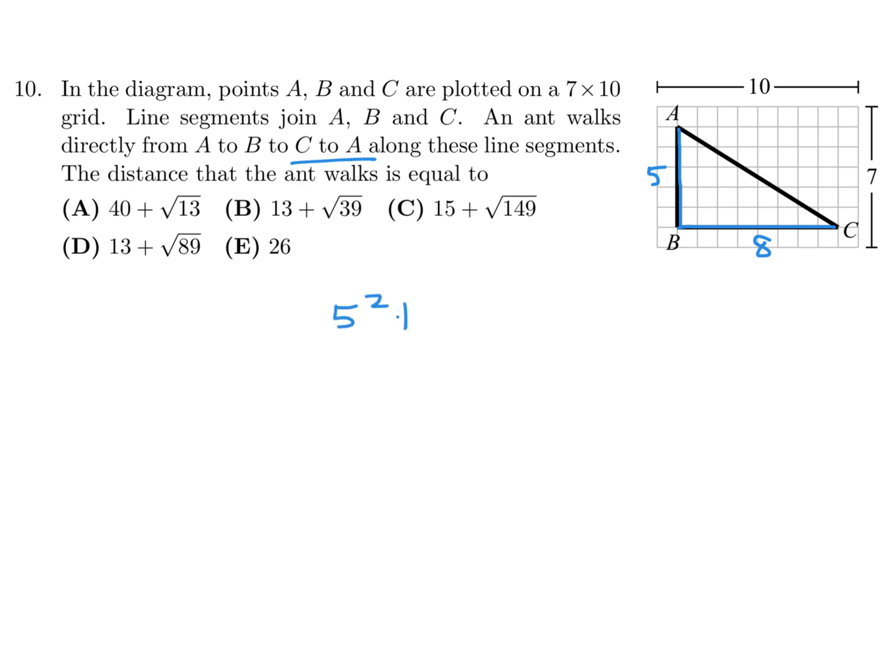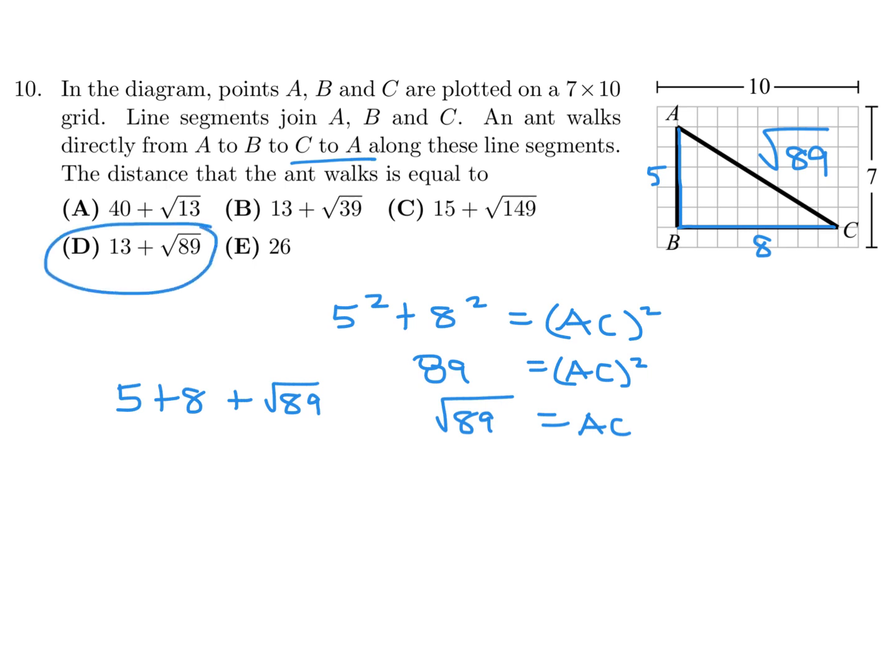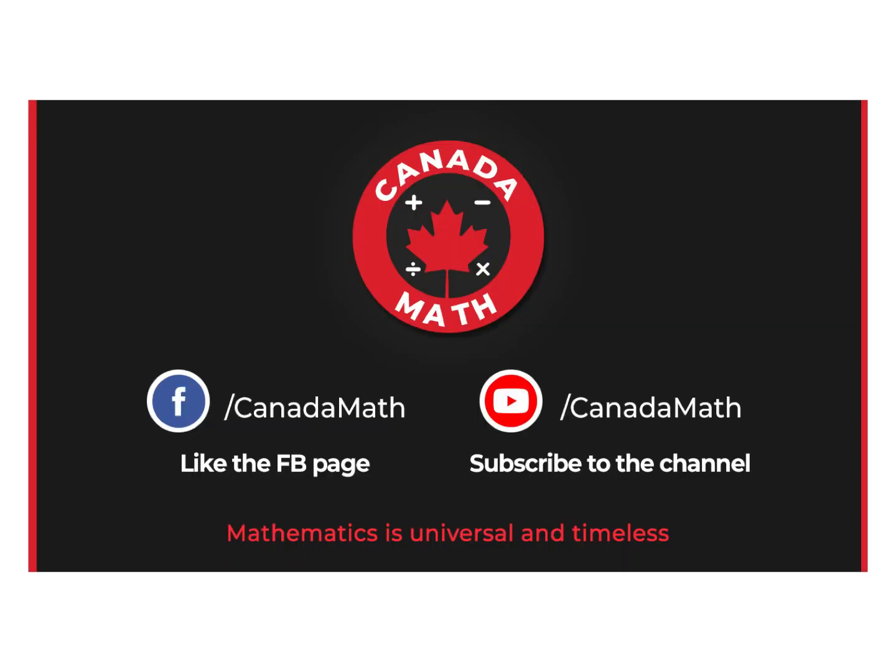You can just use Pythagoras: 5 squared plus 8 squared is AC squared. When you do this you get 25 plus 64, which is I think 89, right? So 89 is AC squared, and therefore AC is root 89. So the total would be 5 plus 8 plus that root 89, and that is 13 plus root 89. Therefore number 10 would be D.